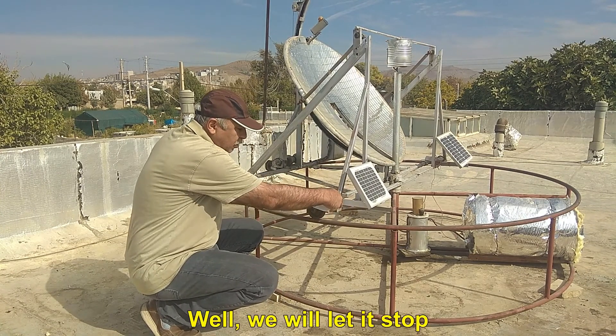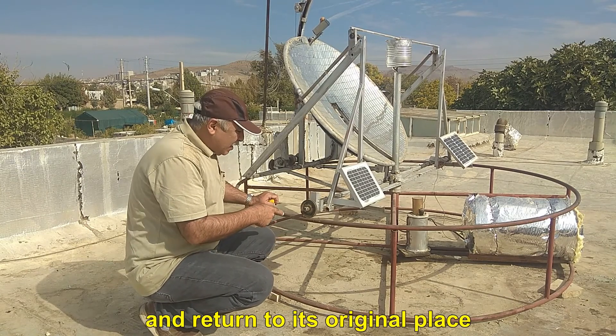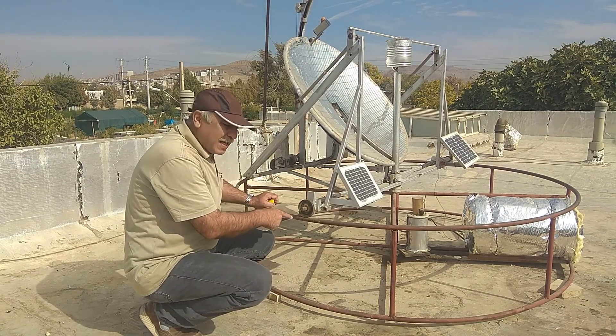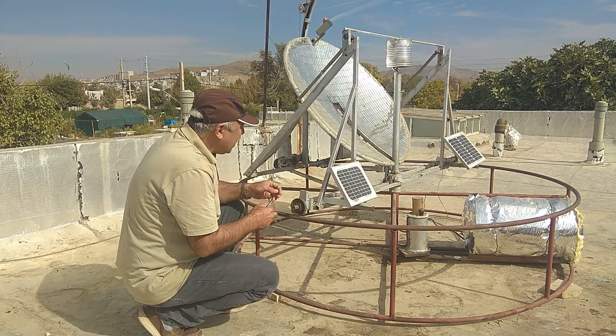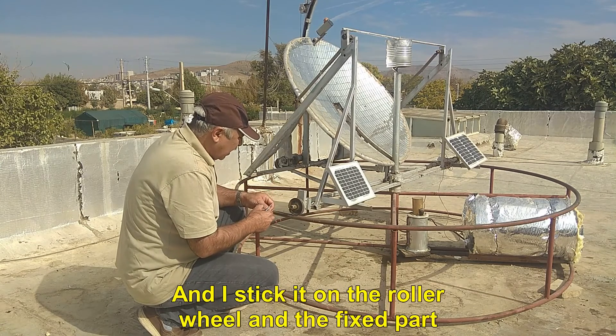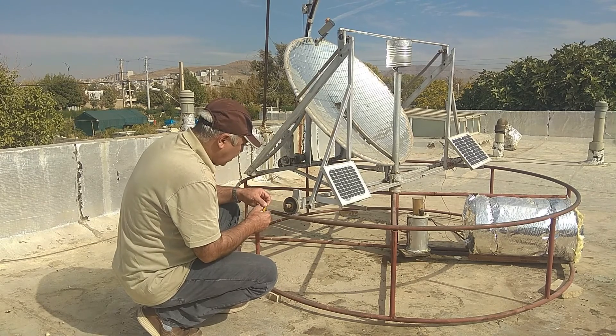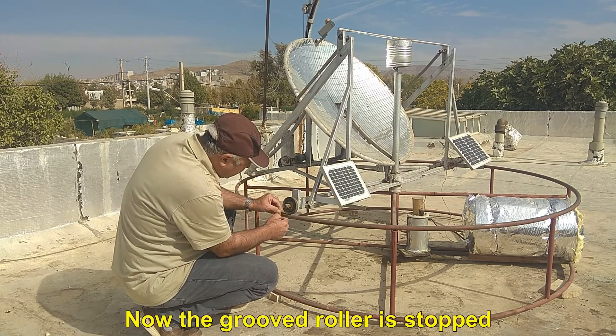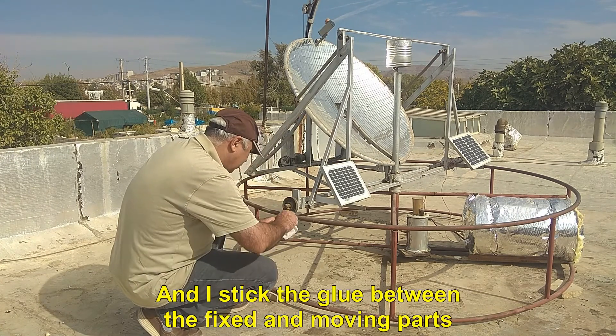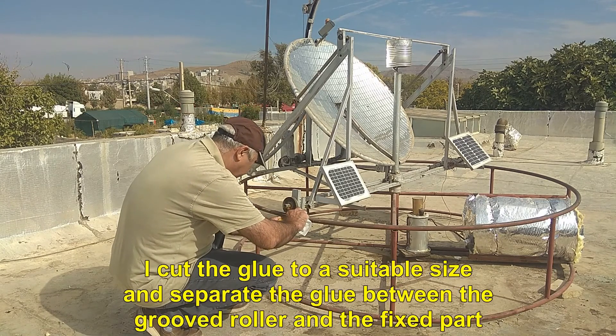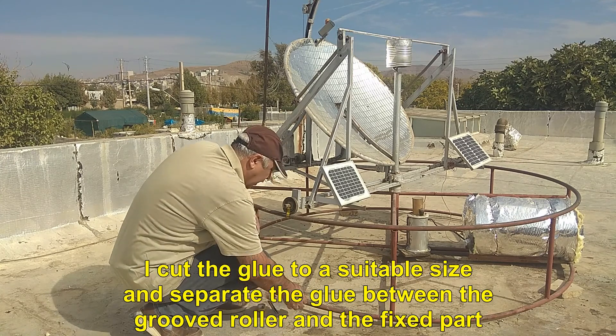Now I am moving it. Well, we will let it stop and return to its original place. For better visibility, I prepared a yellow adhesive tape. And I stick it on the roller wheel and the fixed part. Now the grooved roller is stopped. And I stick the glue between the fixed and moving parts. I cut the glue to a suitable size and separate the glue between the grooved roller and the fixed part.